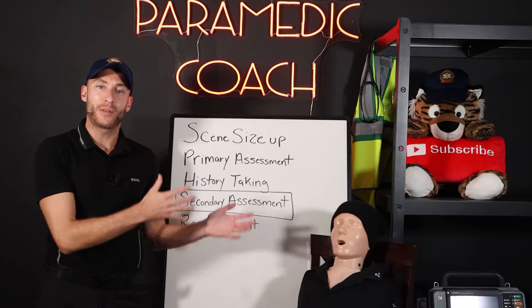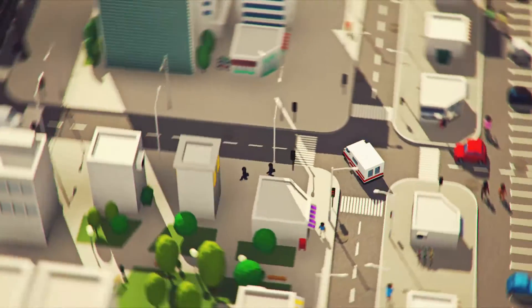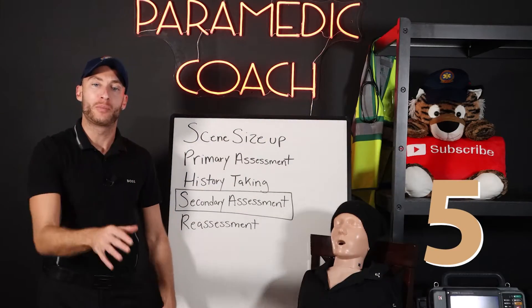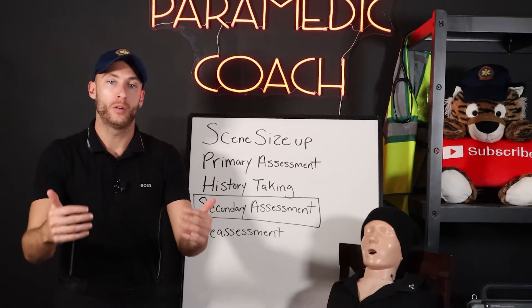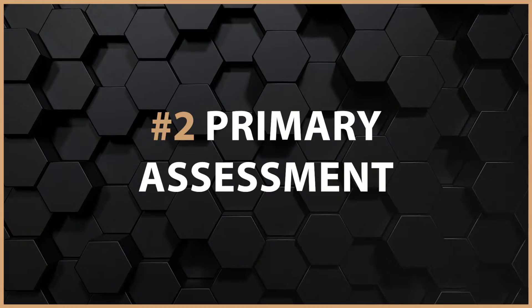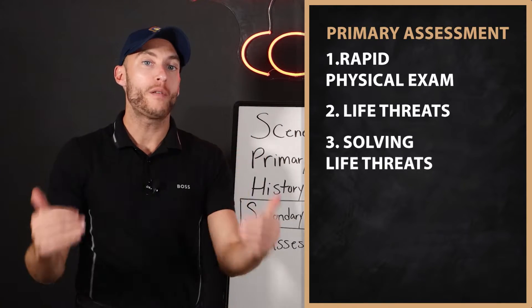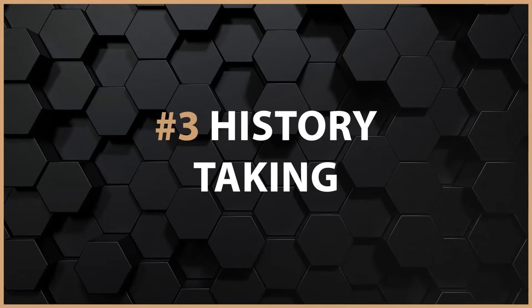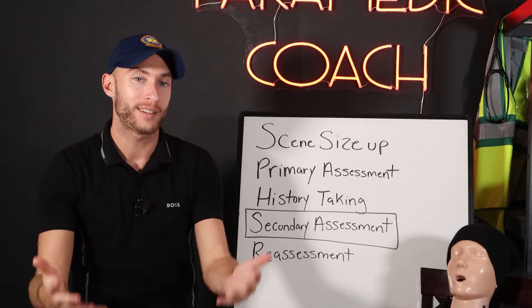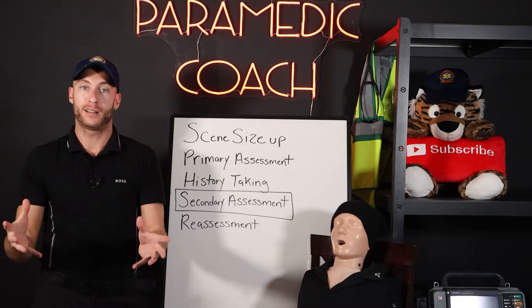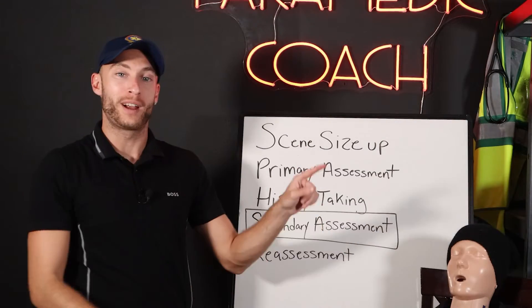In order to understand secondary assessments, we have to know where we're at on the 911 call. There are five main parts to patient assessment. First is scene size up — as we approach the scene, what do we need for this call? Primary assessment, we're looking at a rapid physical exam and life threats and solving those life threats. History taking — that's your OPQRST, that's your SAMPLE — we're gathering a history of the patient the best we can. And now, step four, is our secondary assessment.